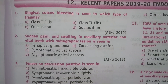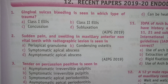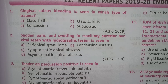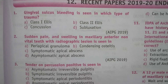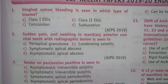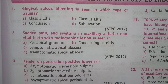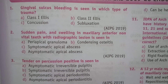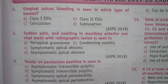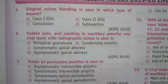Second question: sudden pain and swelling in maxillary anterior non-vital teeth with radiographic lesion is seen in — periapical granuloma, condensing osteitis, symptomatic apical abscess, or asymptomatic apical abscess? The answer is C, symptomatic apical abscess.